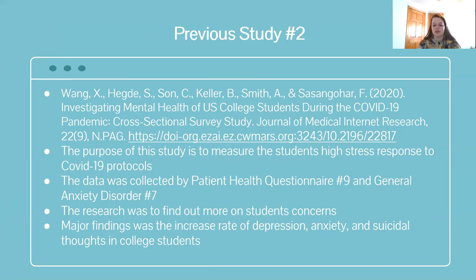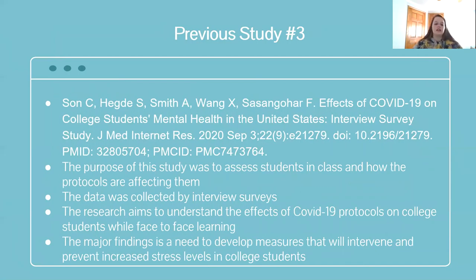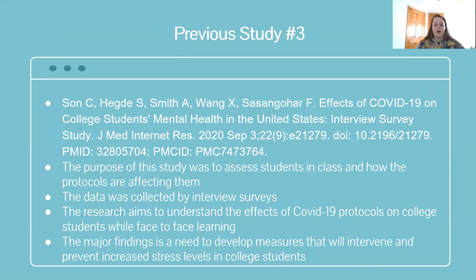The third study assessed in-class students and how protocols were affecting them. It was hard to find research on in-class learning, but this was a solid interview study conducted in New Jersey. Their aim was to see how protocols — wearing masks, cleaning procedures, social distancing on campus — affected students. A major finding was the need to develop measures to intervene and prevent increased stress in college students.